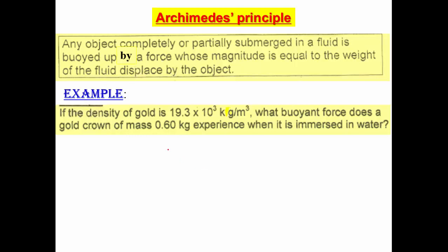In this example, we are given the density of gold and asked to find the buoyant force experienced by a gold crown with a mass of 0.6 kilogram in water. The buoyant force equals the density of the fluid times g times the volume of fluid displaced. This volume equals the volume of the submerged object, assuming it is completely submerged. We know the density of water and g, but we do not know the volume, so we use the object's density and mass to find it.